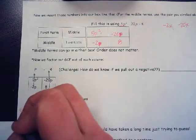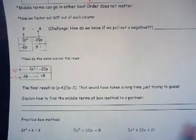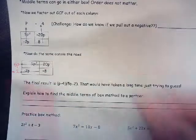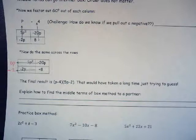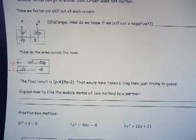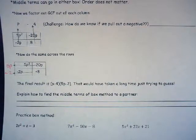I'm going to pull out negative 2, because I hit the negative number last and that's the greatest common factor. The final result is p minus 4 times 5p minus 2. There is a guess and check method out there, but that can take a long time — I would much rather set up a box and quickly solve it. Try explaining how to find the middle terms to a partner, or go teach your parents so they can actually help you on your homework.